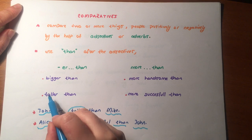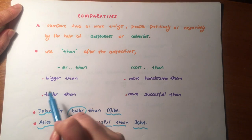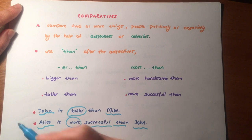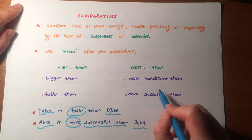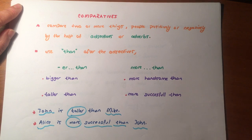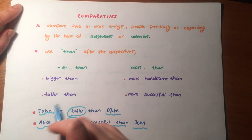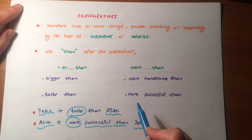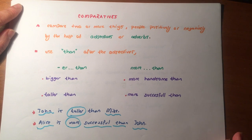Big — bigger than. Big: büyük; bigger than: daha büyük. More handsome than — handsome: yakışıklı; burada da yine bir sıfat kullanılmış; more handsome than: daha yakışıklı. Taller than — tall: uzun; taller than: daha uzun. More successful than — successful: başarılı; daha başarılı.